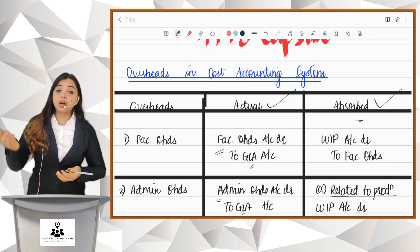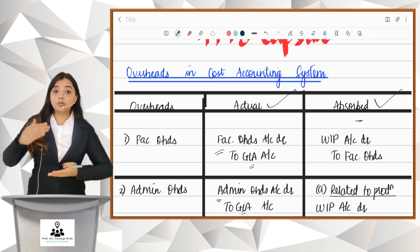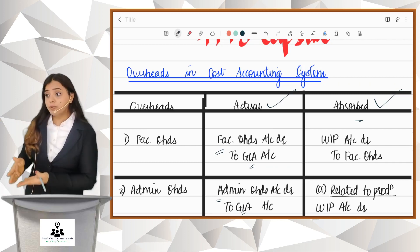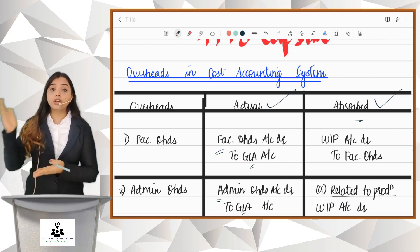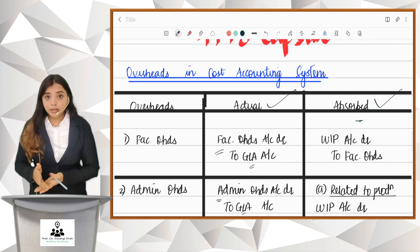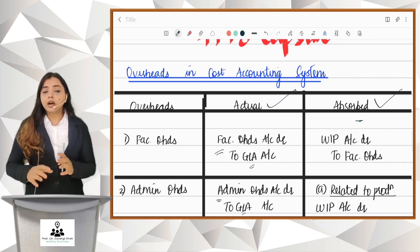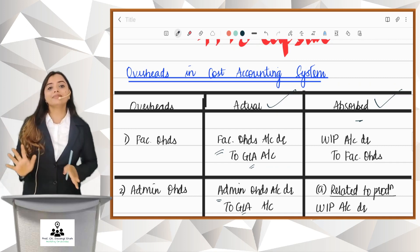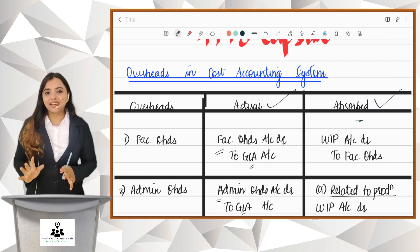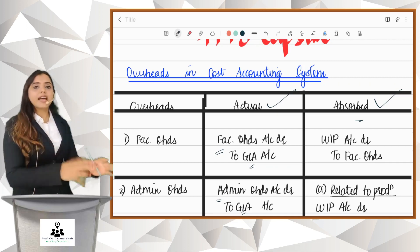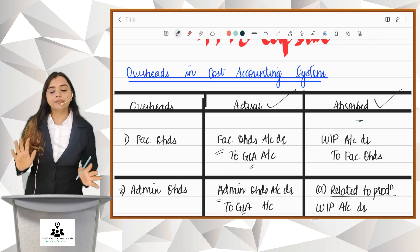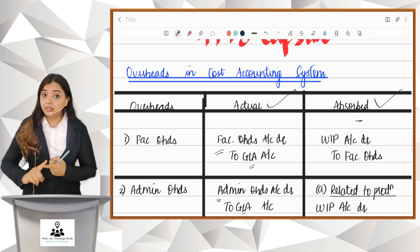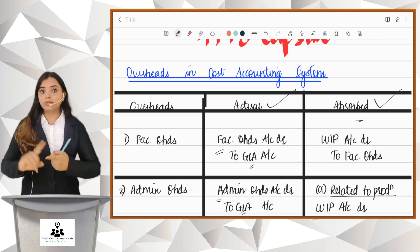But what if they don't give you the absorption rate and they don't give you the absorbed amount either? In that case, you will assume that whatever is actual is absorbed — the actual amount incurred is fully absorbed. Only if the absorption rate is not given should you do this.